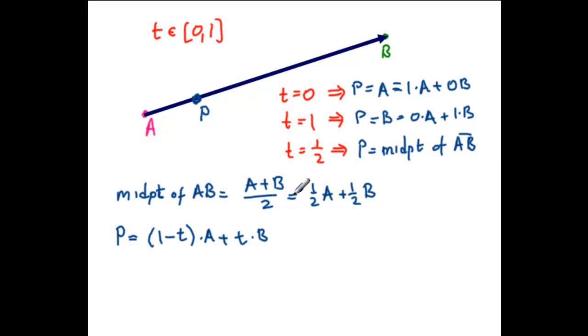So let's see that this actually works. When T equals zero, we have one minus zero times A plus zero times B equals A. Check. That's what we want.